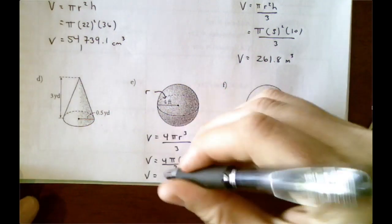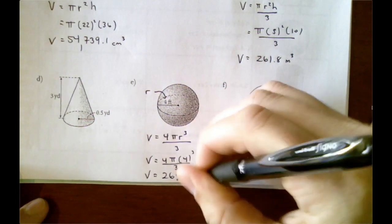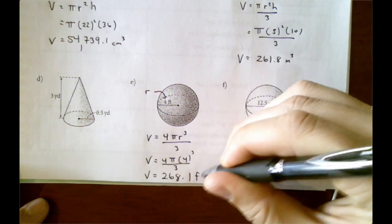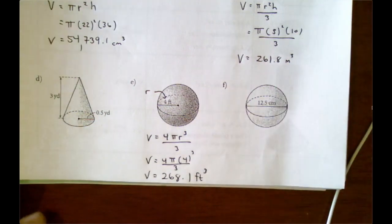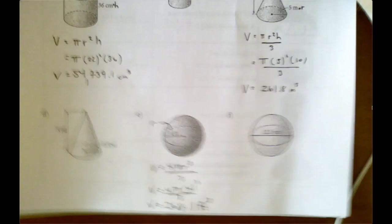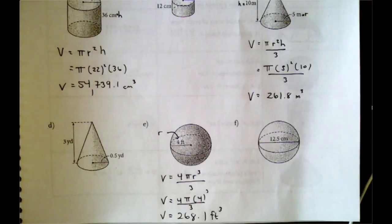That's my answer, 268.1, and we're in feet and we're cubed because we're volume. That's it for volume. Volume is pretty straightforward. Just use the equation, plug in the sides that we know, the measurements for, and punch it in the calculator. That's it for lesson 7.5. Thanks for watching.